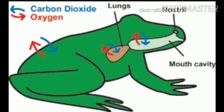A frog is an amphibian — an animal that lives both in water and on land. A baby frog, called a tadpole, breathes through its gills. An adult frog breathes through its lungs on land and through its moist skin in water.